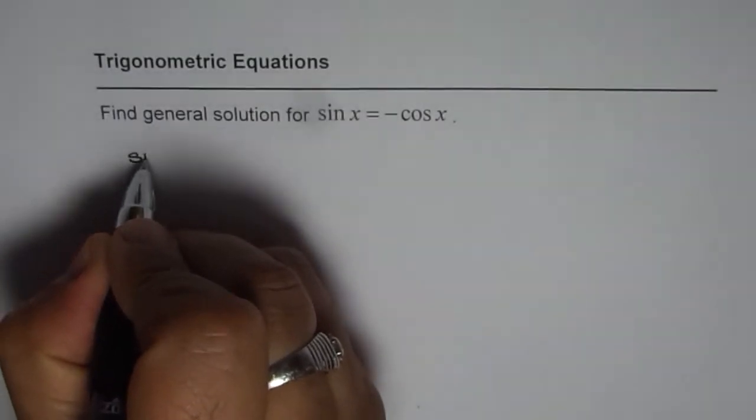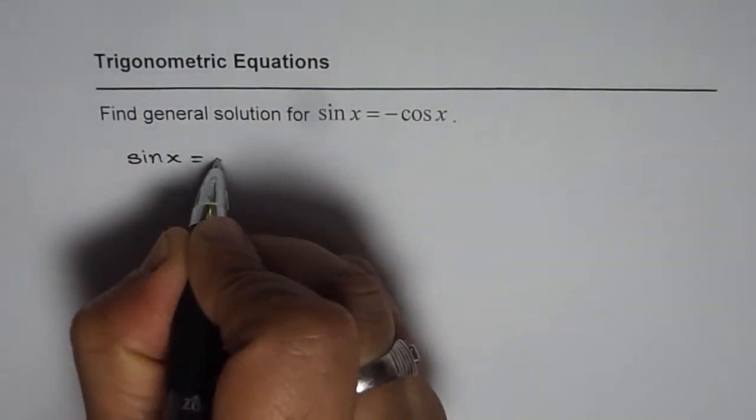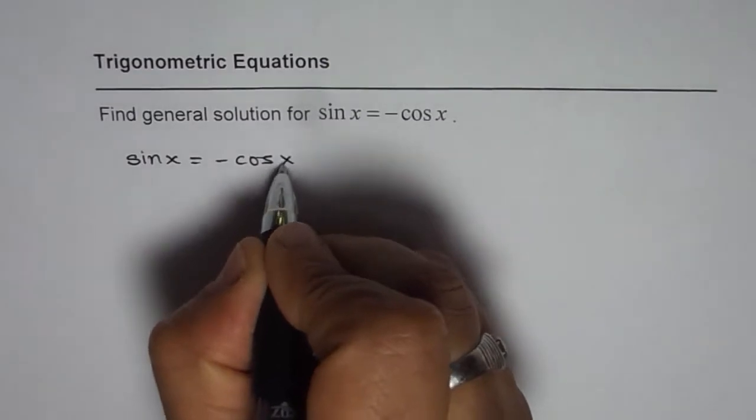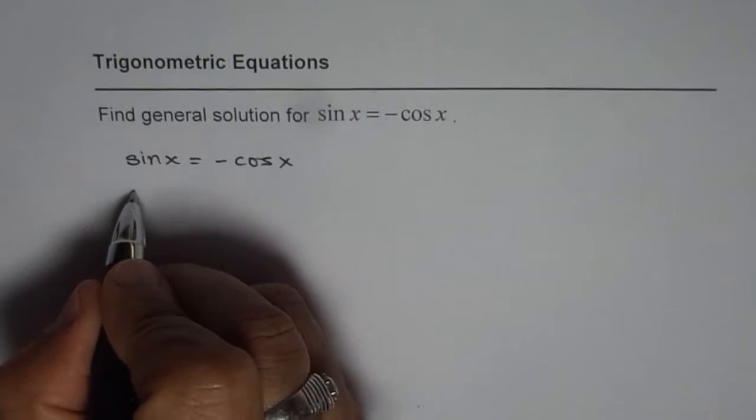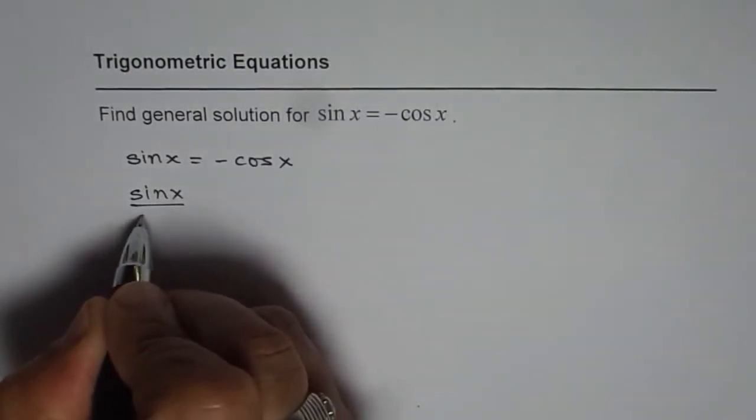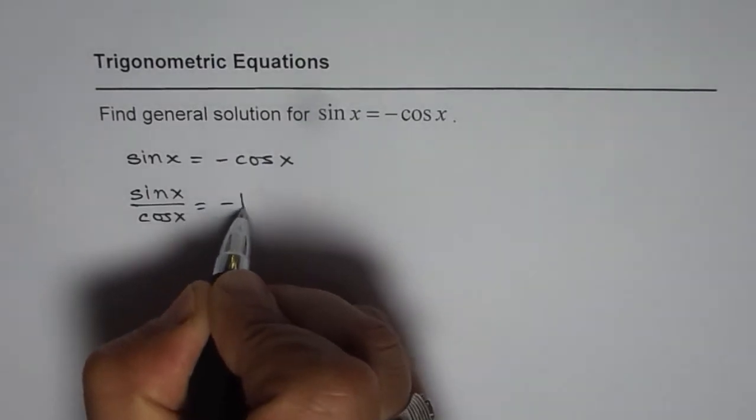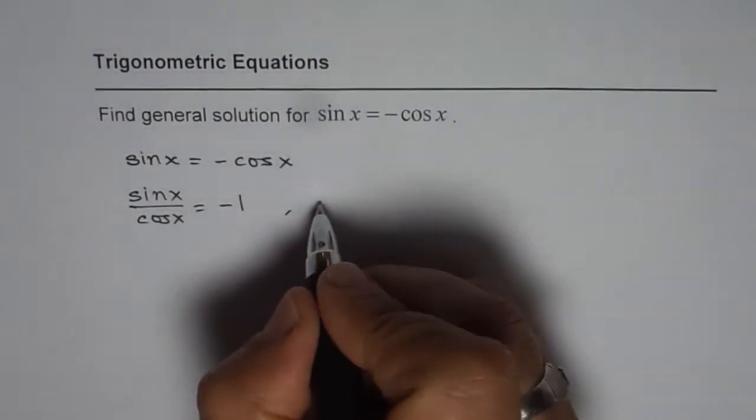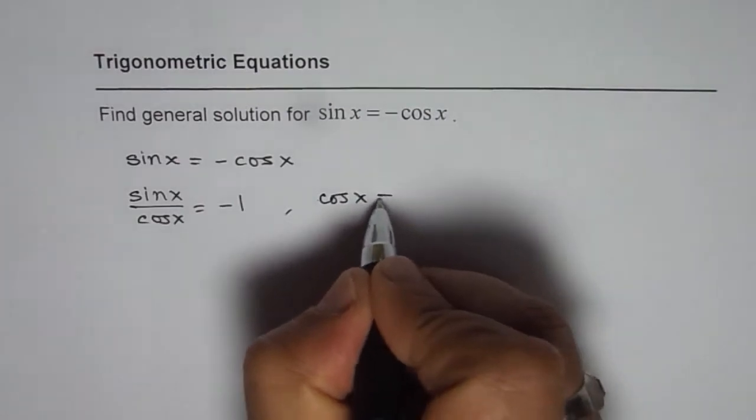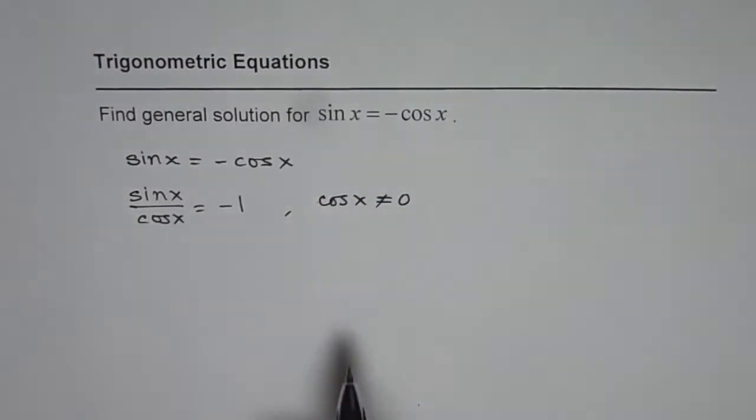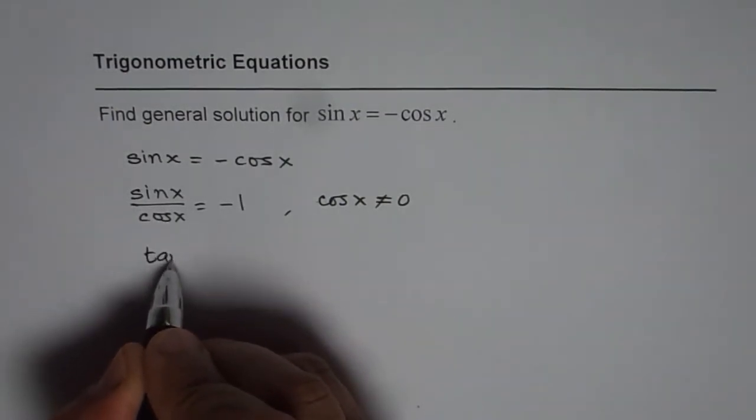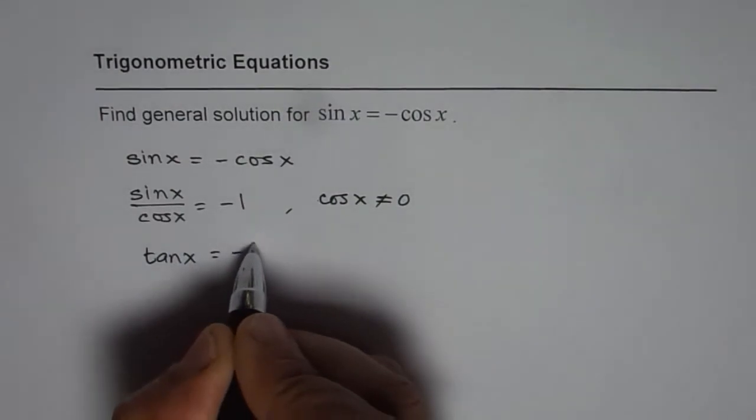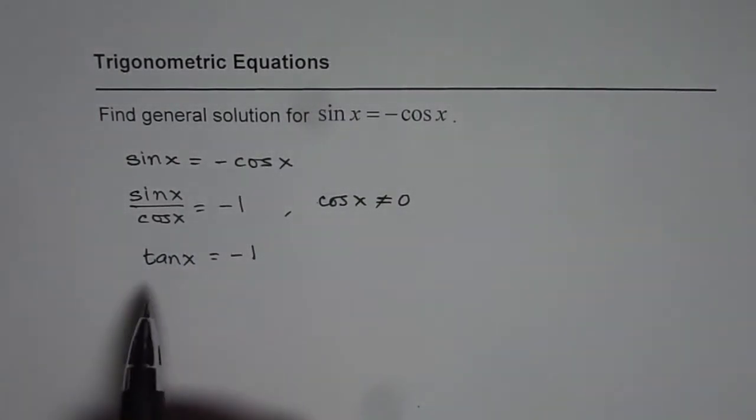So basically we are given that sin x equals minus cos x. Now to solve this equation we can divide both sides by cos x. So if we divide both sides by cos x then we get sin x divided by cos x equals minus 1. Of course when we divide we should say that cos x cannot be equal to 0. So that is a restriction which we put on this. Now you know sin x divided by cos x is tan x. So we have tan x equals minus 1.